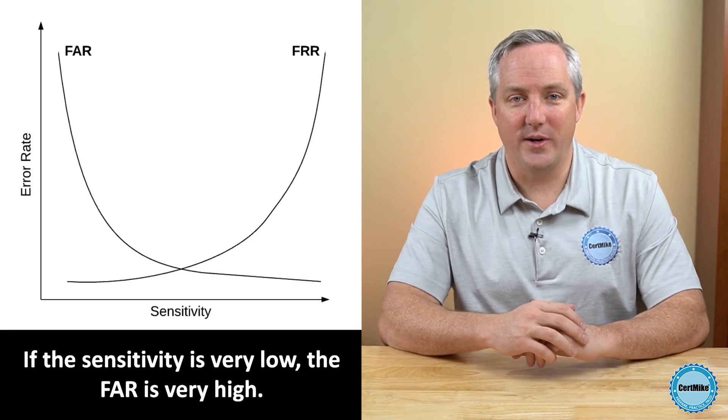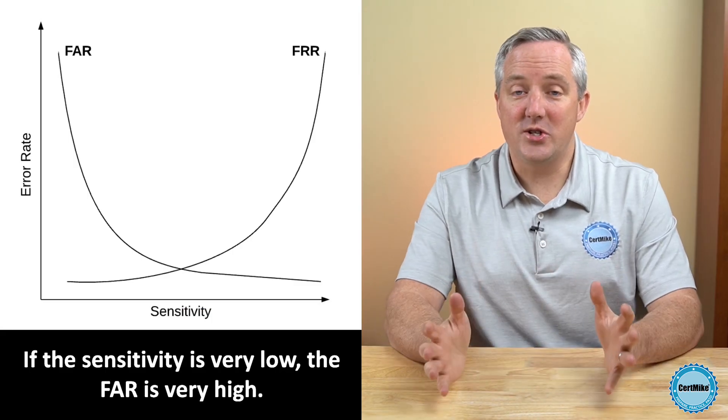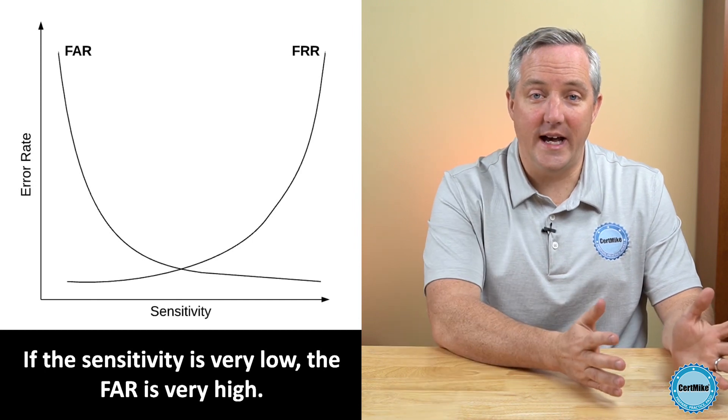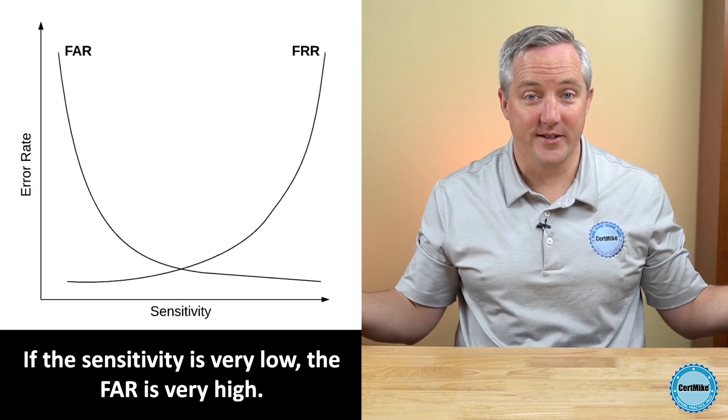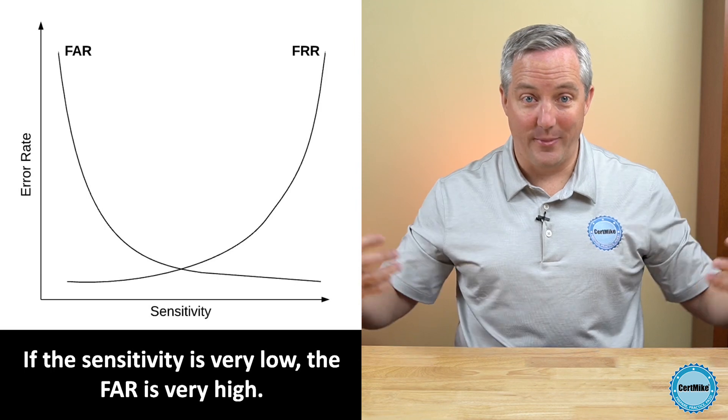The reason that we don't want to rely on the false acceptance rate or false rejection rate to evaluate how well a system works is that those measures are easy to alter. If we adjust the sensitivity of the authentication system, that changes the false acceptance rate and the false rejection rate. Think about it this way: if we turn the sensitivity all the way down and make the system incredibly generous, it's just going to accept everybody.